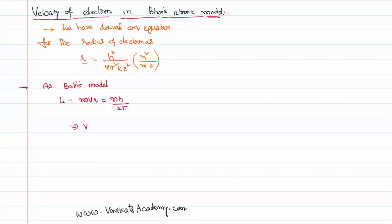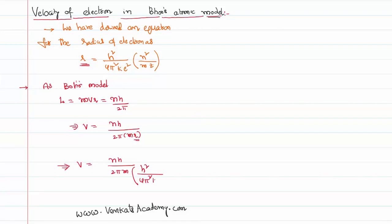From this we can write the velocity of an electron as v = nh / (2πmr). If we substitute the radius of the electron derived in the previous video lesson in place of r, the velocity of an electron in the orbit is nh / (2πm) multiplied by the reciprocal of r, where r = h² / (4π²ke²) × (n²/mz).